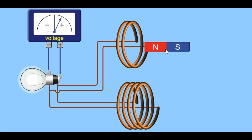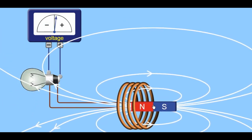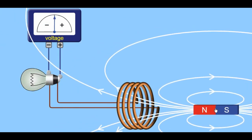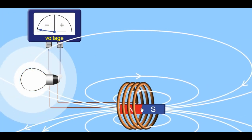And if there are fewer turns, then less voltage is produced. Looking at the field lines, you can see that it's only when the magnet or the coil is moving that the lines are cut and electricity is generated.